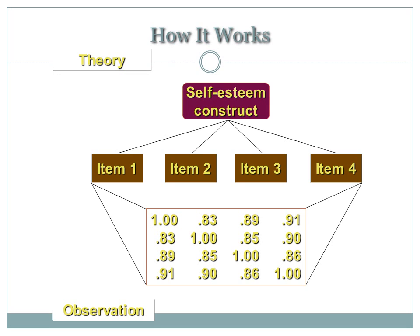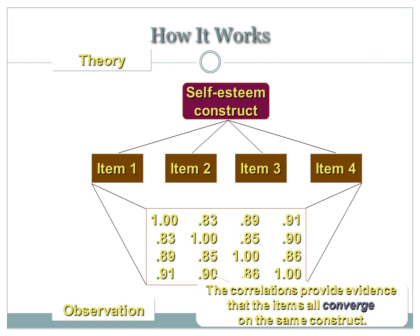Item three with item two is 0.85, and item four with item two is 0.90. Notice that all the correlations — 0.83, 0.89, 0.91, 0.85, and 0.90 — are very high, providing evidence that the items are all converging on the same construct. This suggests that we have convergent validity.